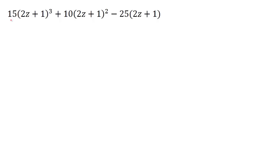So here we have 15(2z+1)³ + 10(2z+1)² - 25(2z+1). We can see that 2z+1 is our common factor as well as the 5 that is the common factor from the 15, 10, and 25.